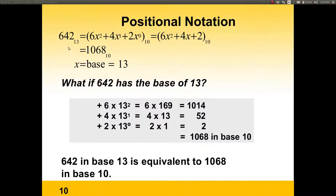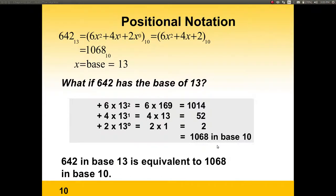How about if we talk about the number 642 in base 13? What does that mean? According to the formula, 6, which is in the second position, is 6 times 13 to the power of 2. That's 6 times 169, which is 1014. The 4 would be 4 times 13 to the power of 1, which is 52. And then 2 times 13 to the power of 0 equals 2. We add all these numbers and it comes out to 1068 in base 10. So 642 in base 13 is equal to 1068 in base 10.